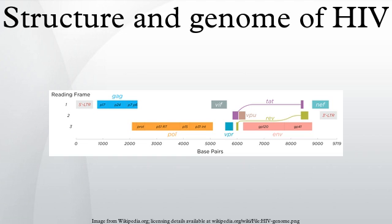Poly-A, the PBS, the DIS, the major SD and the psi hairpin structure located within the 5' end of the genome and the HIV REV response element within the ENV gene.